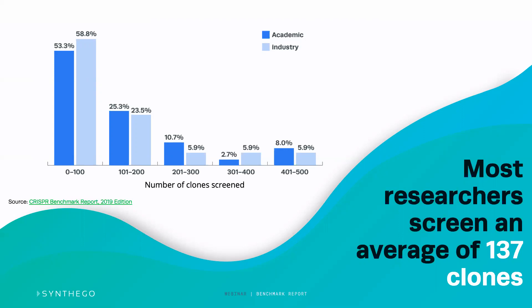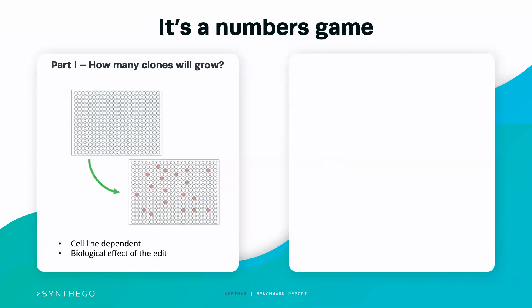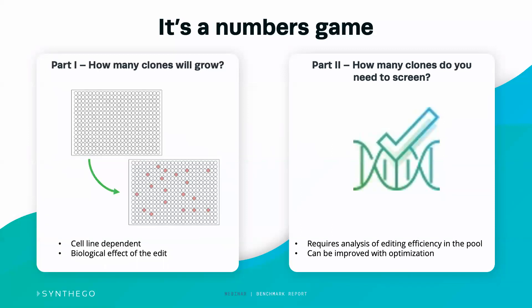So how do we know how many clones to pick? It's really a numbers game with two parts. One is how many clones will physically grow. If you seed a 384-well plate, how many wells will actually form single cells? This is very cell line dependent — some cell lines grow colonies much more readily than others — and it's biologically dependent on the edit, since some edits may cause detriment to the cell. The second part is: of the clones that do grow, how many do you actually have to screen? This requires analysis of the efficiency in the pool, and you can improve this with optimization.